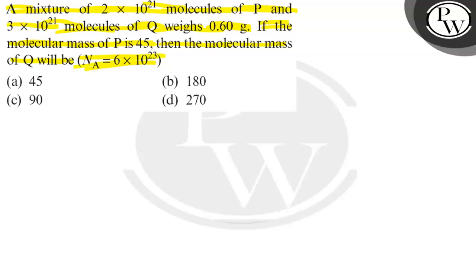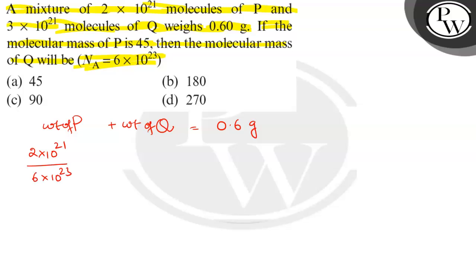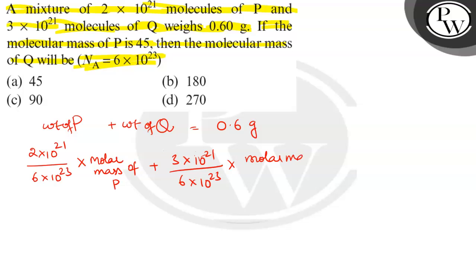Let us solve this. P and Q are given. The weight of P and weight of Q together is 0.6 grams. Number of molecules of P is 2 into 10 power 21 — we will convert this to moles by dividing by 6 into 10 power 23 — into the molar mass of P, plus number of molecules of Q which is 3 into 10 power 21, divided by 6 into 10 power 23, into molar mass of Q, is equal to 0.6 grams.